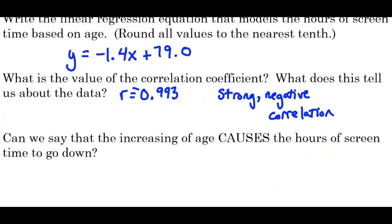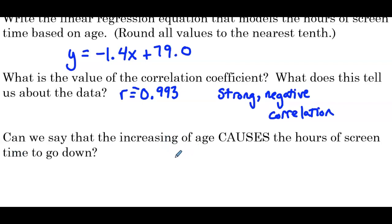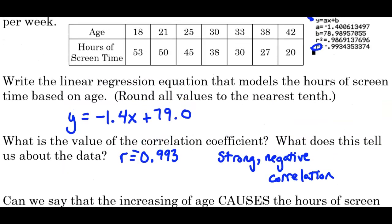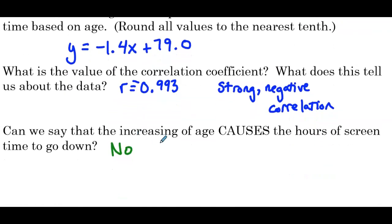Can we say that increasing age causes hours of screen time to go down — is there a cause and effect? In this case, the answer is no. Just because you get older doesn't mean you automatically have to stop using your phone as much. It just so happens that in this data set that is what is exhibited, but it doesn't have to be that way. This is important because a lot of people see a strong correlation coefficient and think that means there's a cause and effect, but they're completely separate ideas.